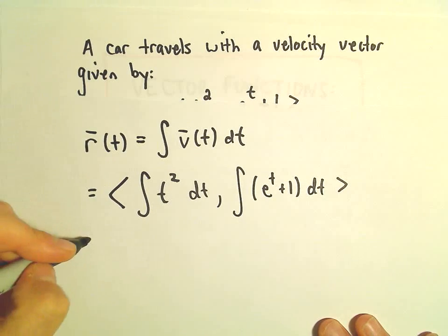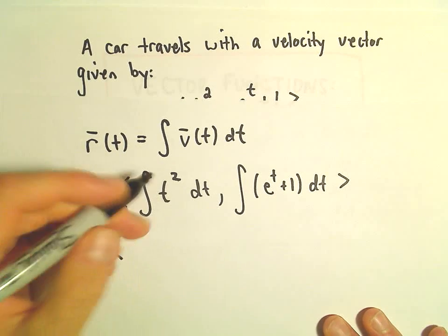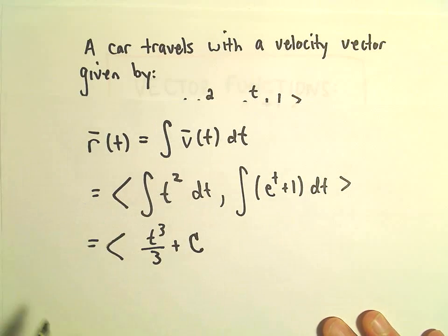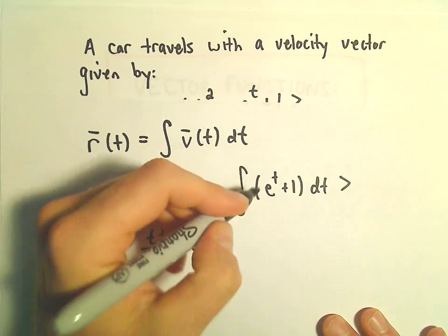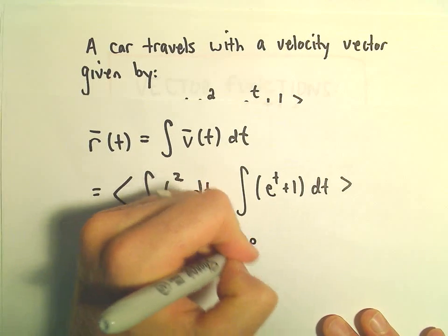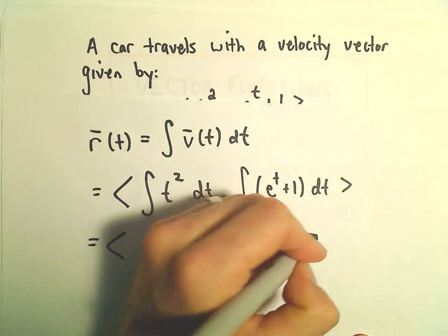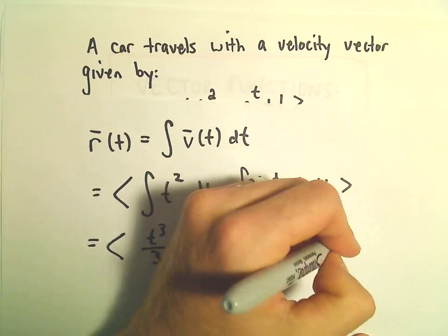Let's see. If we integrate the first part, the antiderivative of t² will be t³/3. We have to add our arbitrary constant c. And when we integrate the second part, we'll get e^t + t. Again, we have to introduce a new constant - let's call it d since we've already used c.